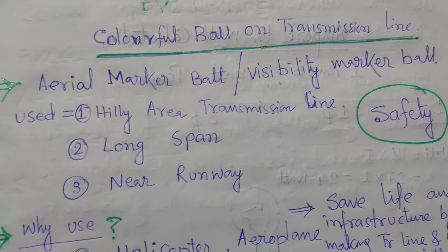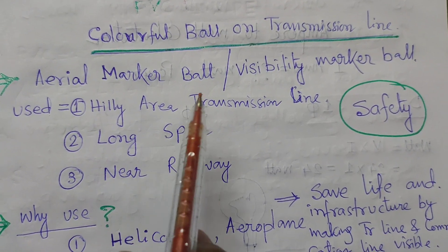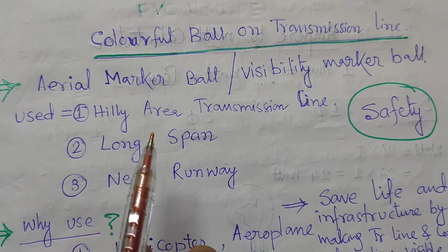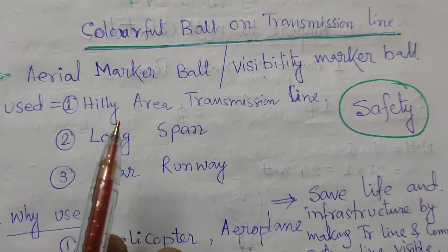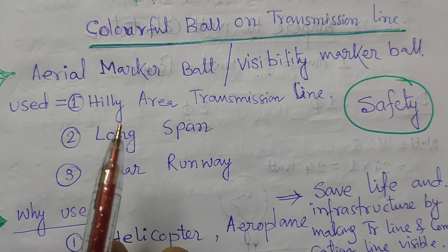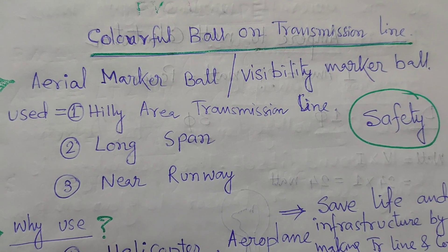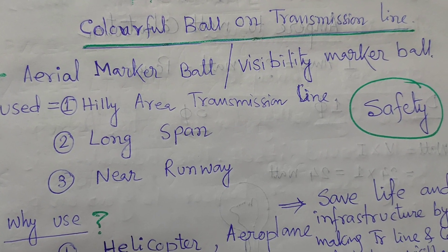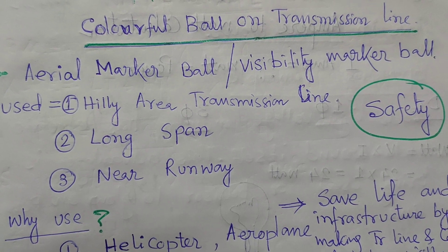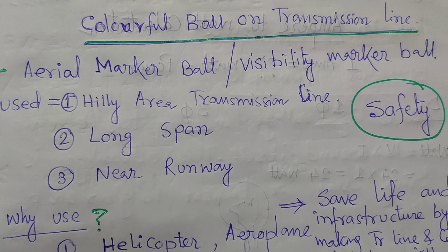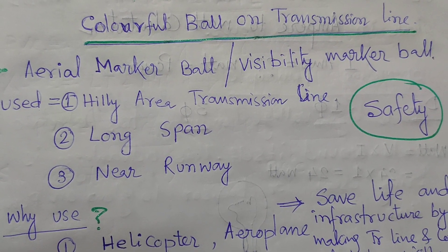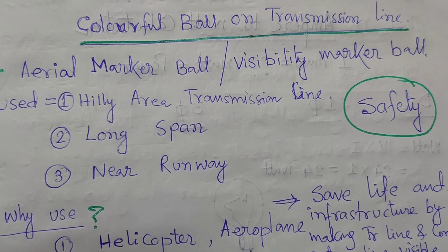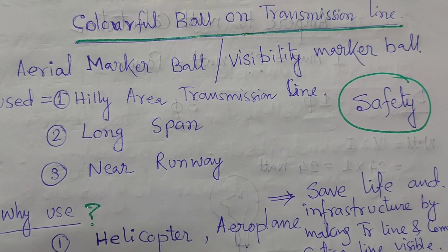The aerial marker ball is also called the visibility marker ball — 'visibility' meaning visible. This installation is done for visibility purposes because transmission lines and communications lines are installed at several heights. If installed at several heights, visibility for aircraft and helicopters is very much essential for the safety of the local area and the safety of property and infrastructure.